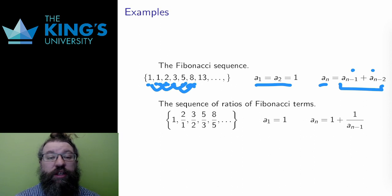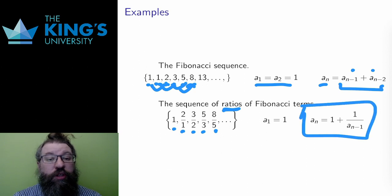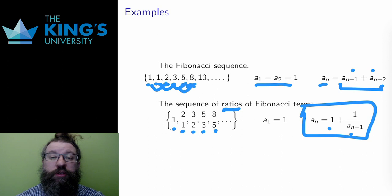One interesting related sequence is the sequence of ratios of Fibonacci terms. Each element in this sequence is one term from the Fibonacci sequence divided by the previous Fibonacci term. Interestingly, you can prove that this sequence has its own recursive form. Each number is 1 plus the reciprocal of the previous. Unlike the Fibonacci sequence, this related sequence is bounded, and where it is going is an interesting question.